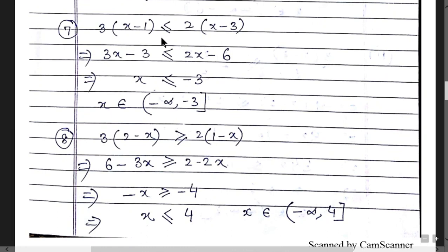Question 7 includes an equality sign. With 3x - 3 ≤ 2x - 6 simplified, we get x ≤ -3. The interval is (-∞, -3], using a square bracket at -3 because of the equality sign. Infinity is always excluded since it cannot be represented on the number line.